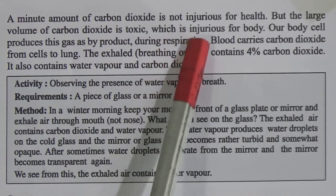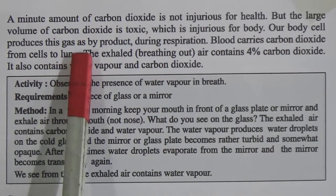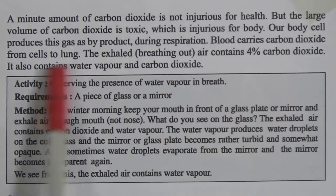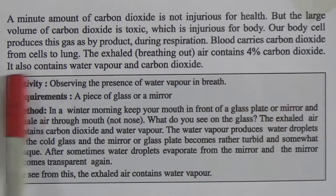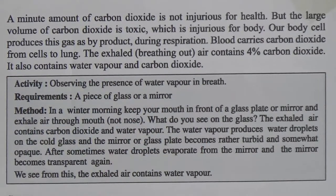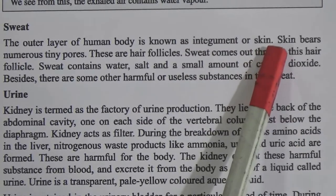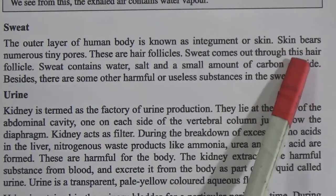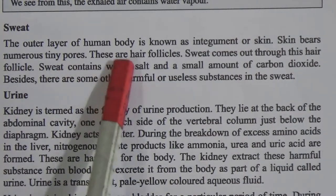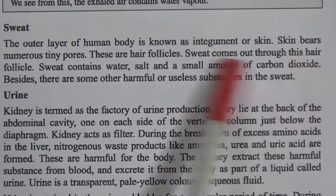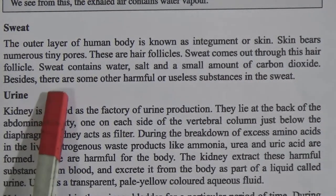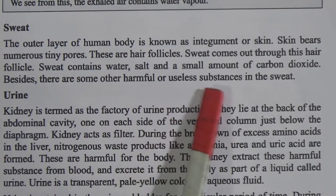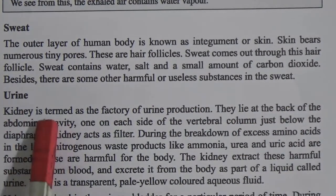A minute amount of carbon dioxide is not injurious to health, but a large volume of carbon dioxide is toxic. Our body cells produce this gas as a byproduct during respiration. Blood carries carbon dioxide from the cells to the lungs, and exhaled air contains four percent carbon dioxide along with water vapor. The outer layer of the human body is known as the integument or skin. The skin bears numerous tiny pores and hair follicles through which sweat comes out, containing water, salt, and a small amount of carbon dioxide, besides other harmful or useless substances.